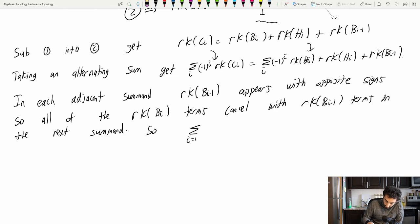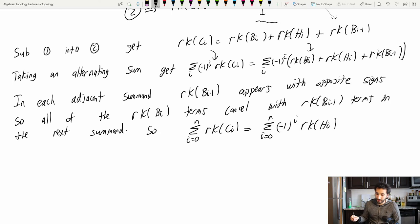So in the end, we got what we want. The summation as i goes from zero to N of the rank of the Ci's is equal to the summation as i goes from zero to N of minus one to the i, the rank of Hi. And just let me clarify that all of this should have been in parentheses right here, of course.